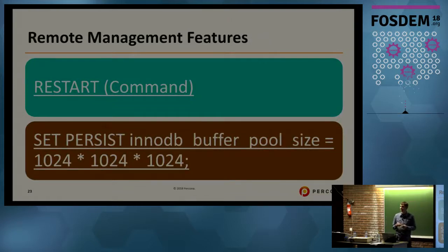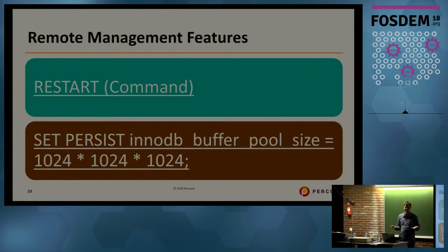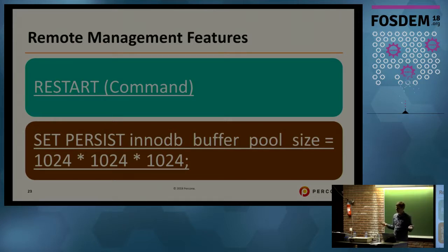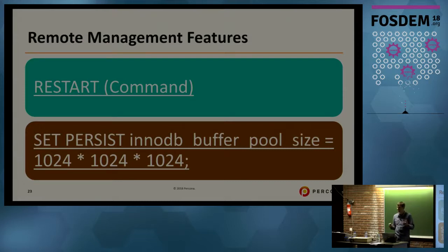Remote management features include the RESTART command, which I think is fantastic, and SET PERSIST, which is another great command that allows you to set a variable so it's persisted when the instance restarts. So many MySQL users would set a global variable to some value, not modify my.cnf, keep MySQL running for months, then restart - and it behaves differently or runs slower and nobody understands why because that change was long forgotten. With SET PERSIST, you can ensure that doesn't happen.